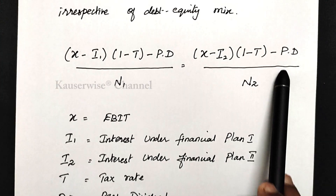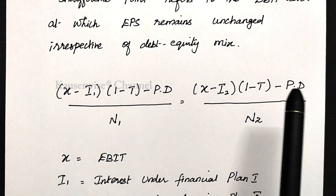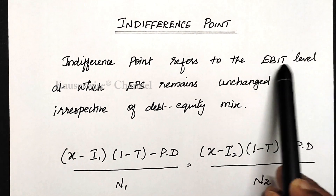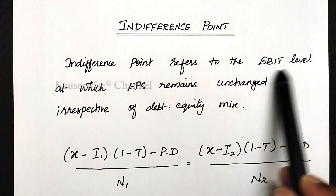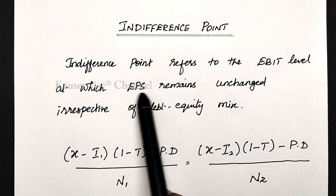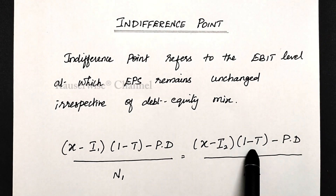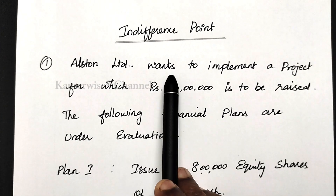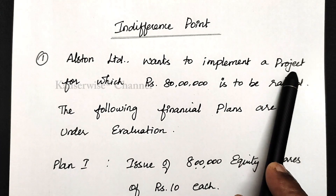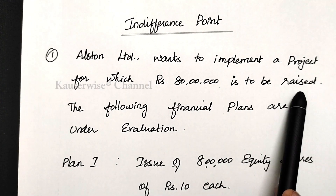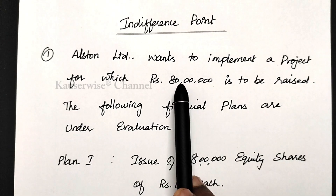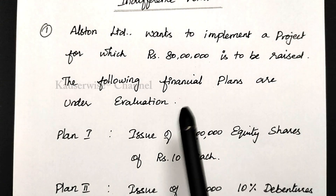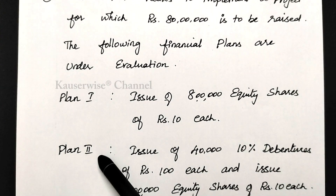With the help of this equation, we are going to find out the indifference point — that is, at what level of EBIT the EPS is going to remain same for 2 different alternatives. Now let us see the numerical problem. Alston Limited wants to implement a project for which 80 lakhs is to be raised. The following financial plans are under evaluation. Here we have 2 different plans.